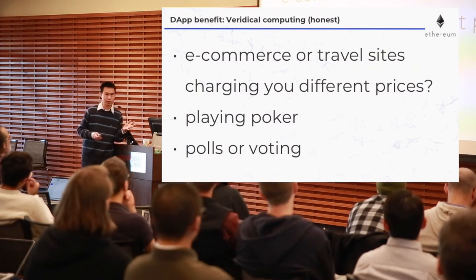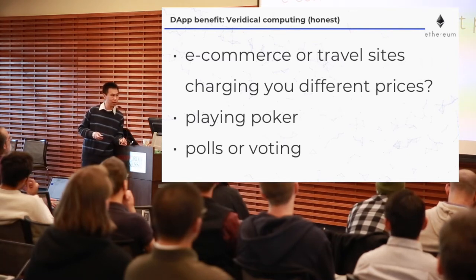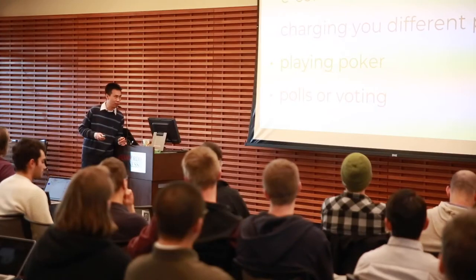Verifiable computing is honest computing. Think about these examples: when you go to an e-commerce or travel site, could they be charging you different prices depending on your login or browsing behavior? Or if you're playing poker online, is the backend server honest — not telling other people your cards? Or even simple things like polls or voting: if you see something has 100 upvotes on Reddit, can you really trust it? Could someone just have updated a database entry?